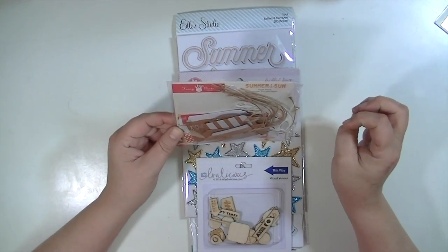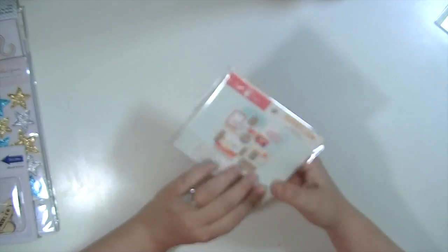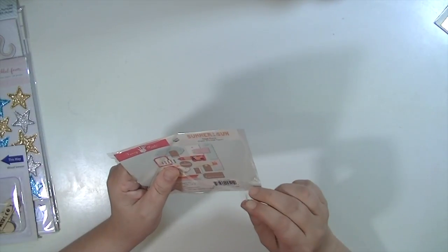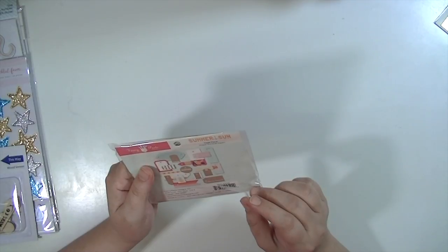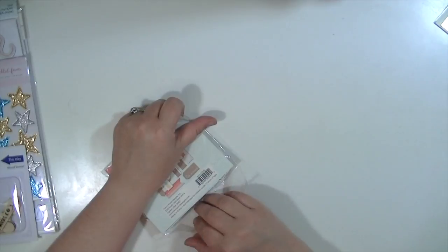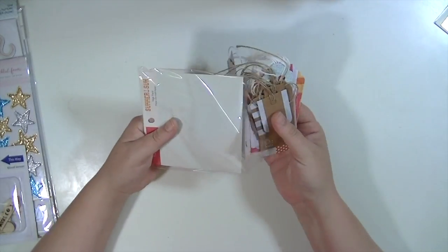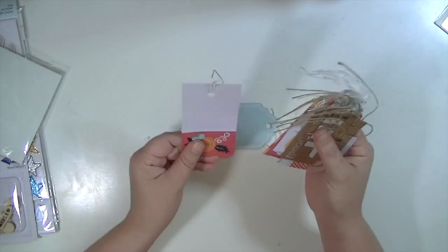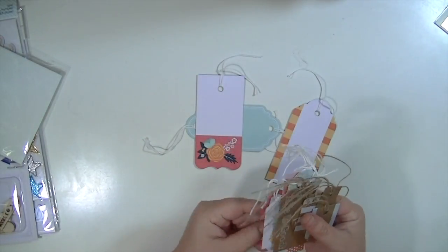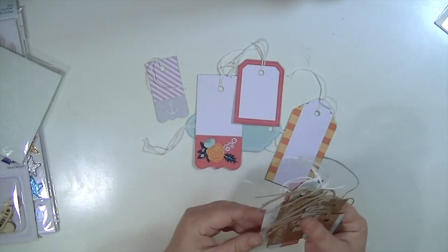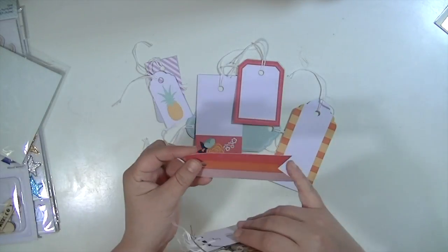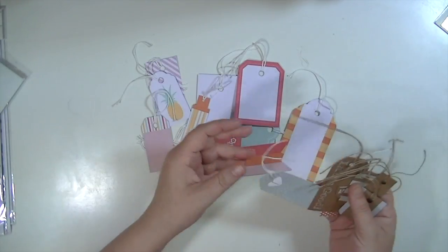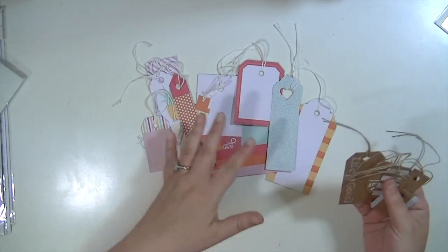The next thing is from the Fancy Pants Summer Sun line. These are called Tags Pack Paper and Craft Paper. I'm not real familiar with Fancy Pants lines, but it's really cute. And you get a bunch in here. There's a nice variety of sizes. And then they have different little ends to them. Some are fancy and scalloped, and some are straight, and some are like a banner.